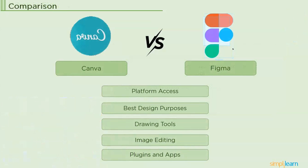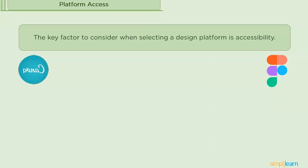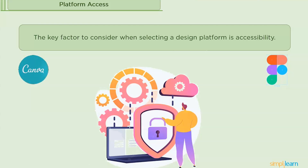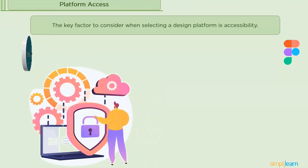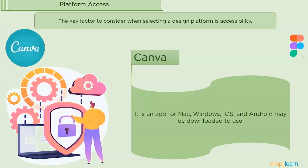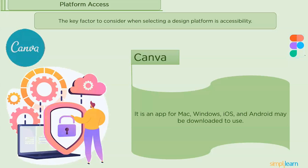Now we will discuss some basic features for both Canva and Figma. The first one is platform access. The key factor to consider when selecting a design platform is accessibility. For Canva, you may use it as a browser-based design tool or by downloading an app for Mac, Windows, iOS, and Android. Your previous designs will be saved in your Canva account even if you check in using a different device. You can also use the app to save work locally if you don't have an internet connection.